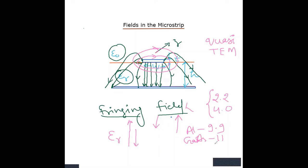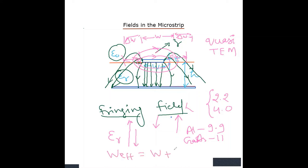We must choose dielectric material carefully according to our application. In transmission line analysis, we consider the fringing field as part of the transmission line. If the actual width of the strip is W, there is a small extension on each side due to fringing fields. The effective width W_eff equals the actual width W plus two times this small extension. In calculations where fringing fields are considered part of the circuit, we use W_eff rather than W.